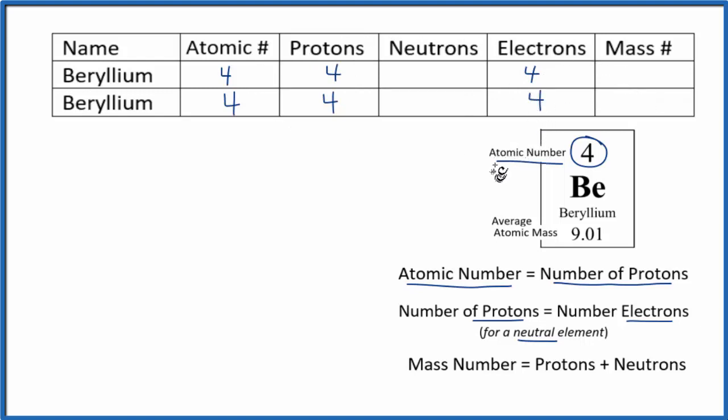So we have all of this information. We're left with finding neutrons and the mass number. Often when you do these tables, you're given either the neutrons or the mass number, and you can figure the other out. If you're not, what you can do is take this average atomic mass here and round that to the nearest whole number. So let's round that to nine.